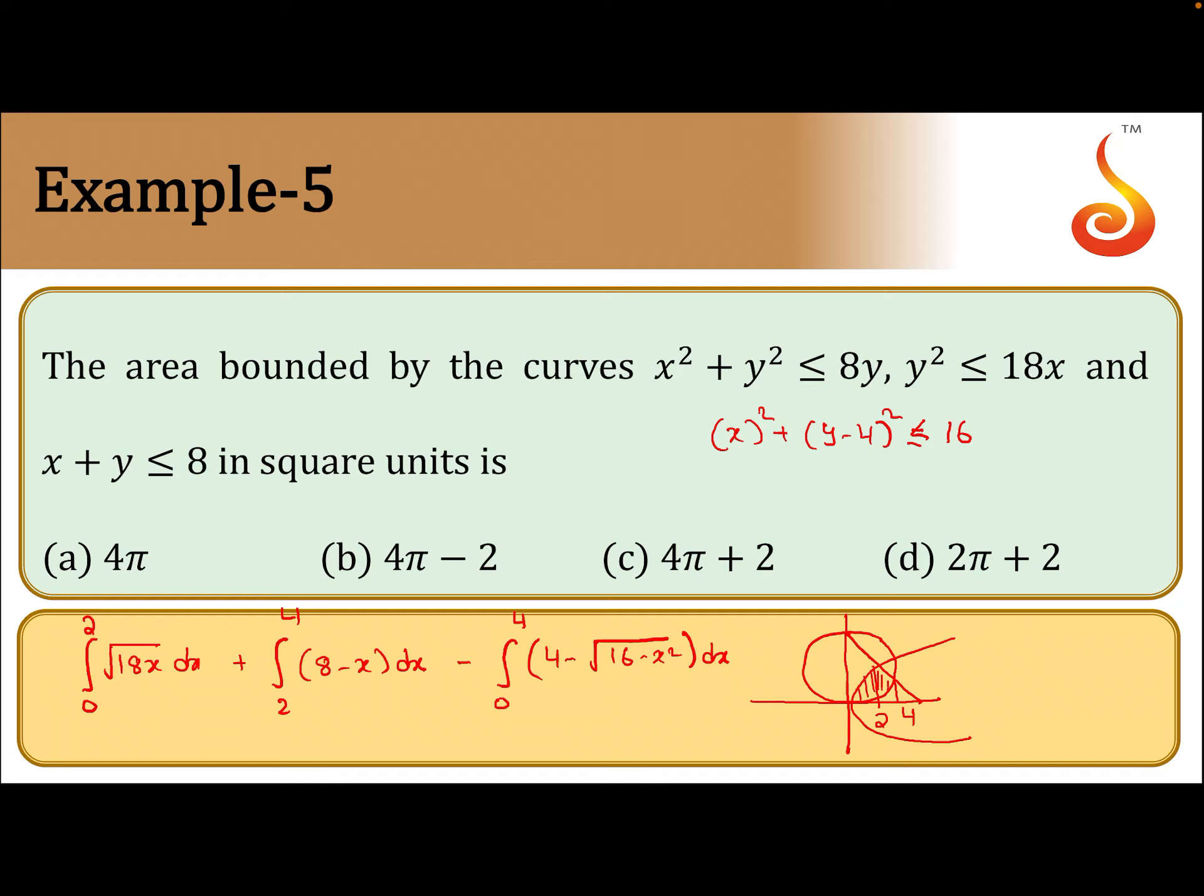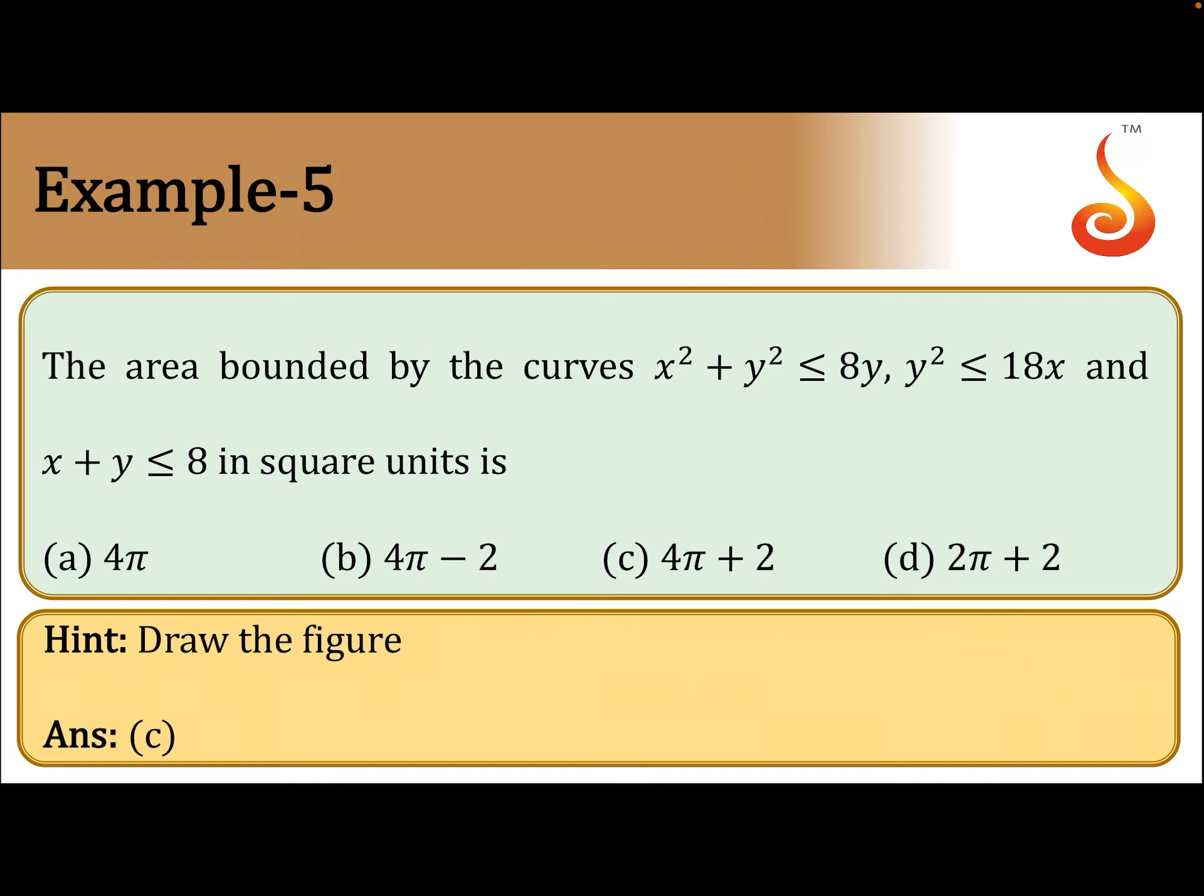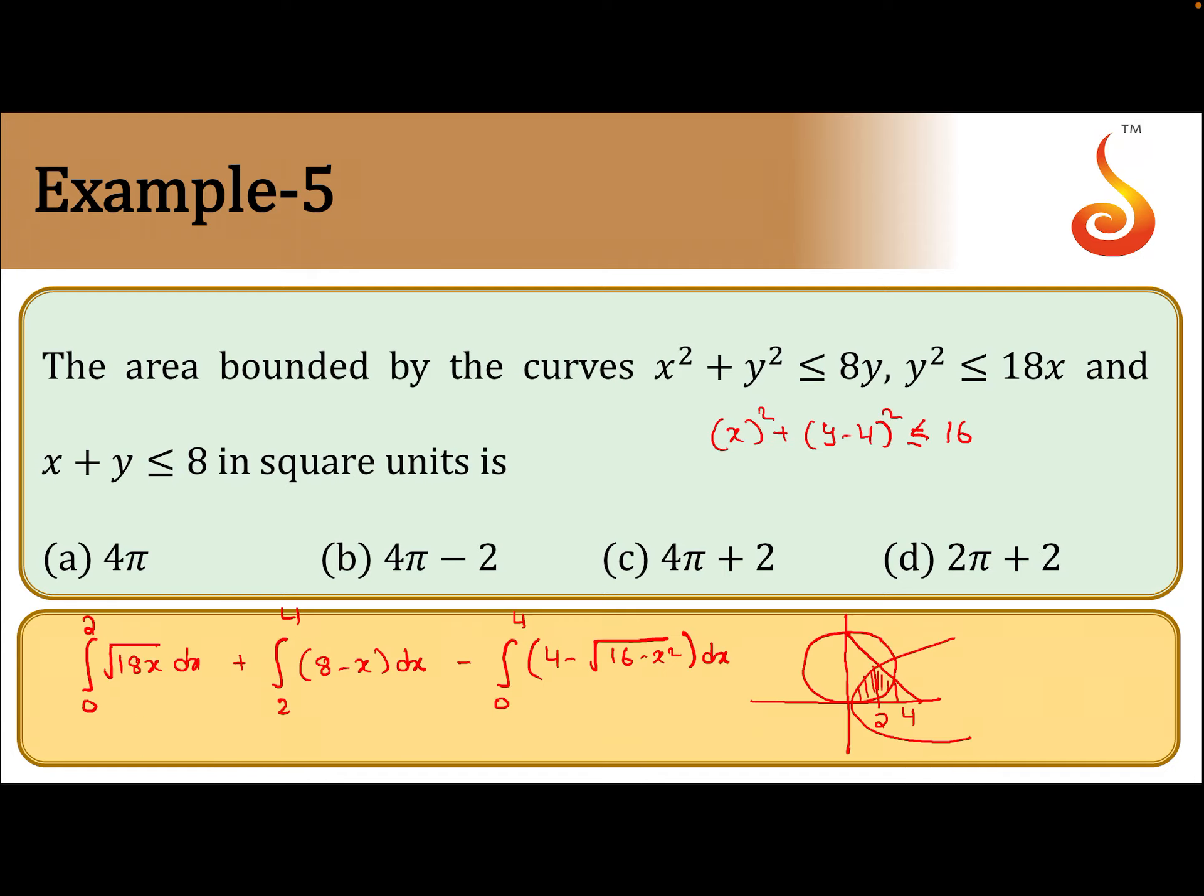If we simplify this, we get our required result. If we integrate it, we get √(18x) dx plus ∫₂⁴ (8 - x) dx minus ∫₀⁴ √(16 - x²). If you substitute the values, option C, 4π + 2, will come. So this is the shaded area required.